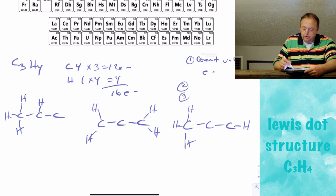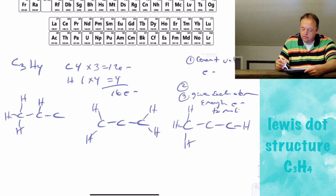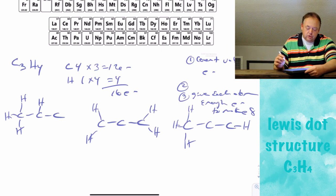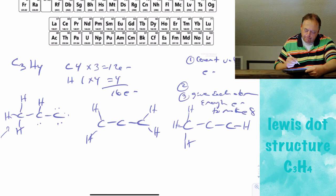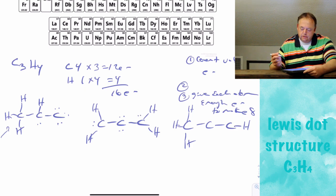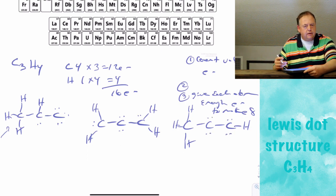And another possibility: the middle carbon has 3 hydrogens and the end carbon has 1 hydrogen. The third step is to give each atom enough lone pair electrons to make 8 total. In structure A, the first carbon already has 8 electrons in bonds, so no dots needed; the middle carbon needs 2 dots; and the end carbon needs 6. All 3 carbons now satisfy the octet rule. Similarly for structures B and C, lone pairs are added so each carbon has 8 electrons.